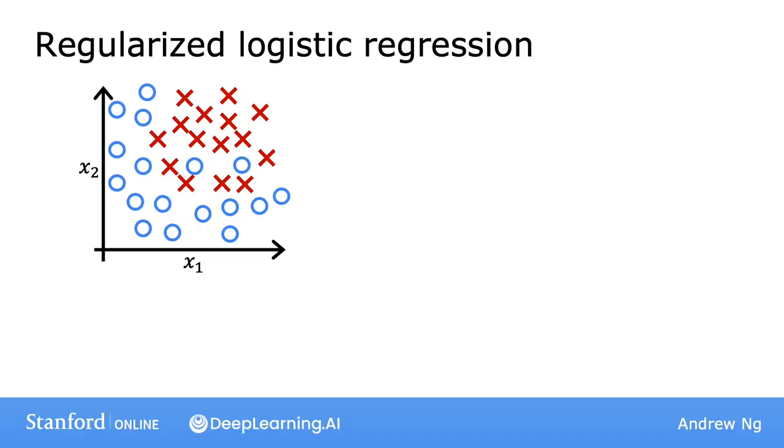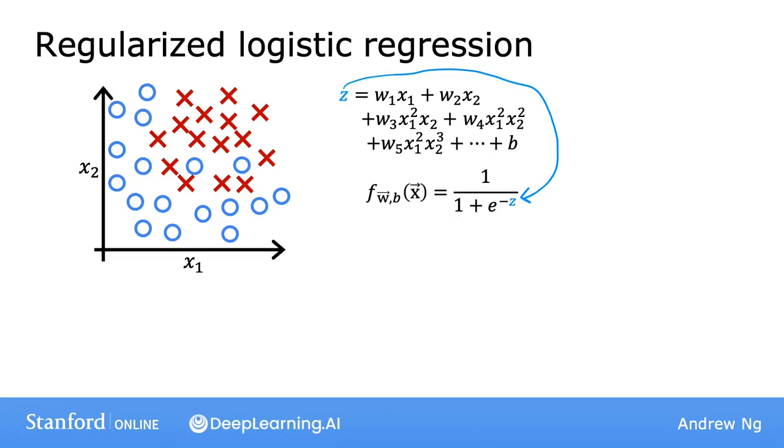Here's the idea. We saw earlier that logistic regression can be prone to overfitting if you fit it with very high-order polynomial features like this. Here, z is a high-order polynomial that gets passed into the sigmoid function, like so, to compute f.